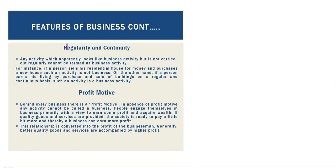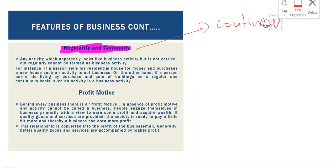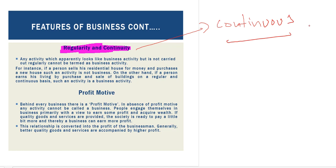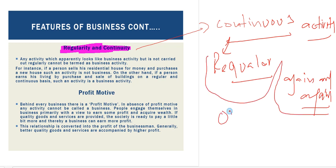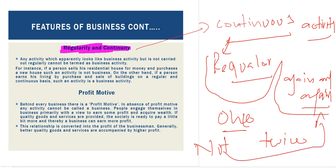The next feature of business is regularity and continuity. Business is a continuous activity. Continuous means regular — something that occurs again and again. If any activity is done only once or twice and is not done again and again, it cannot be called a business.